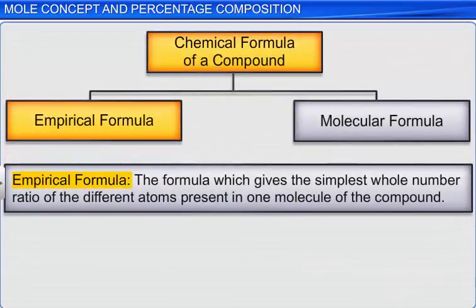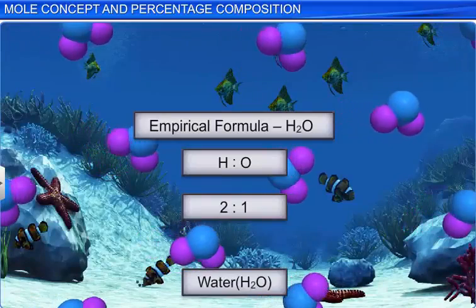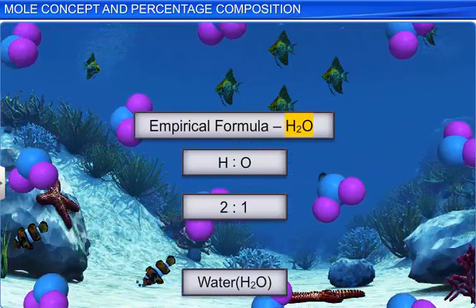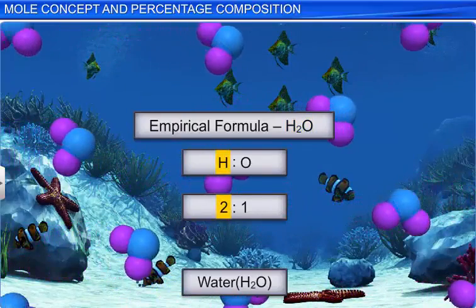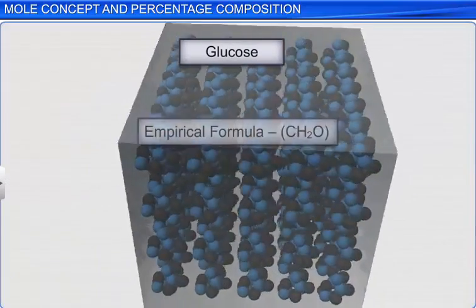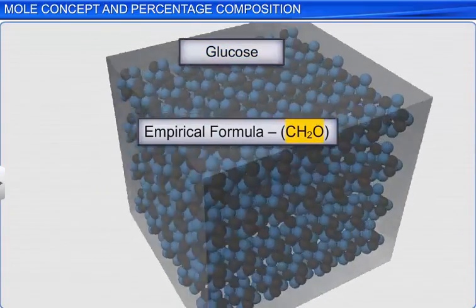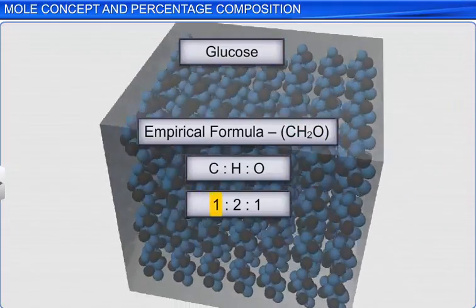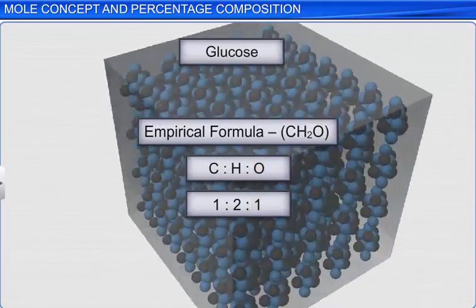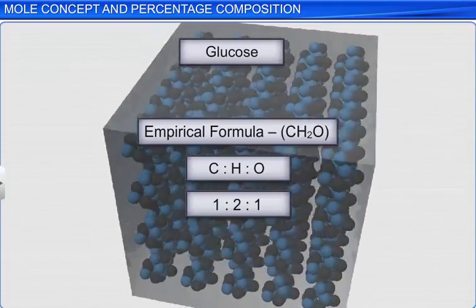The empirical formula is defined as the formula which gives the simplest whole number ratio of the different atoms present in one molecule of the compound. For example, the empirical formula of water is H₂O, indicating that two hydrogen atoms are present for each oxygen atom. Similarly, the empirical formula of glucose is CH₂O, indicating one carbon atom for every two hydrogen and one oxygen atoms. Note that the empirical formula only indicates the atomic ratio of the elements present in one molecule of the compound.